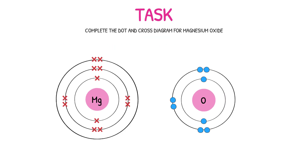Now it's your turn to have a go at drawing the dot and cross diagram for the ionic compound magnesium oxide. Pause the video and take your time to work through your answer. Press play once you're ready to check your work.